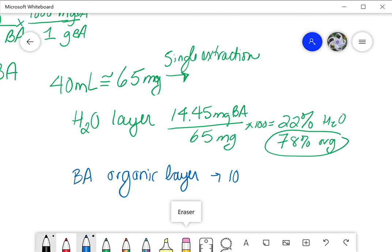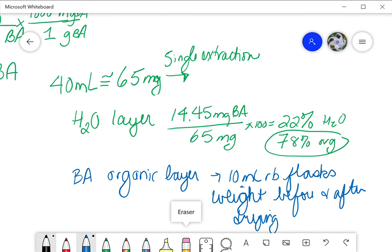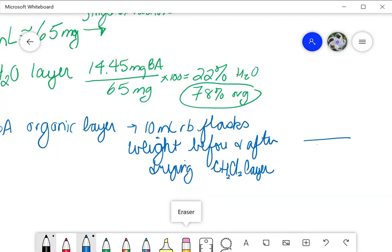So the amount of benzoic acid in the organic layer will come from the little 10 ml round bottom flasks, and you're going to weigh those before and then after drying your methylene chloride layer. So with that one, you're going to be able to do the same thing. You'll pretend that we had 65 milligrams to start with. Maybe the difference between the two round bottoms is maybe 29 milligrams. So for the organic layer, you'd say I collected 29 milligrams and there was 65 total, so you'll do the percent that way.